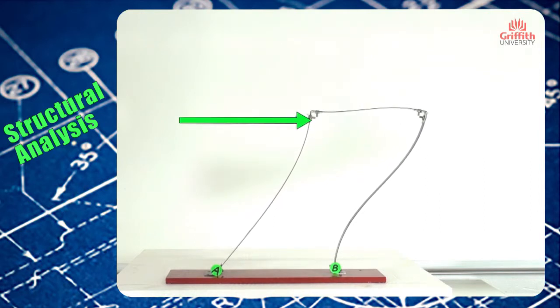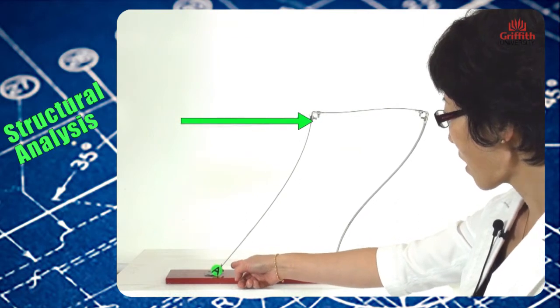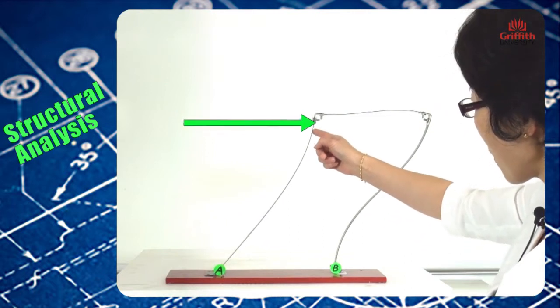Now we look at the left-hand side column. Because point A is a hinge support, rotation is permitted. Therefore, this column develops into a single curvature.